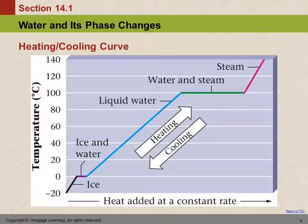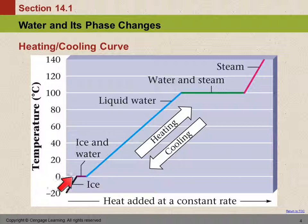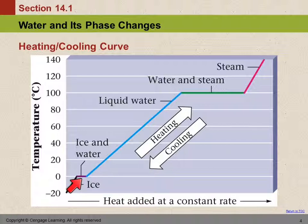Let's look at what happens when a substance changes state, using water as an example — probably the only pure substance we experience in all three of its physical states: water, ice, and steam. If we take ice at minus 20 degrees Celsius and add heat to it, the ice will warm up until it reaches zero degrees Celsius, at which point the ice will begin to melt. As the ice begins to melt, the temperature will not rise until all the ice has melted.